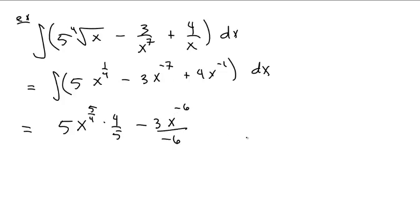We add 1 to the negative 1, and we get 0, and we are about to divide by 0. And then we say, whoa, whoa, whoa. We do not divide by 0. Hey, wait a second. This is 4 times 1 over x. That will be 4 natural log of the absolute value of x.